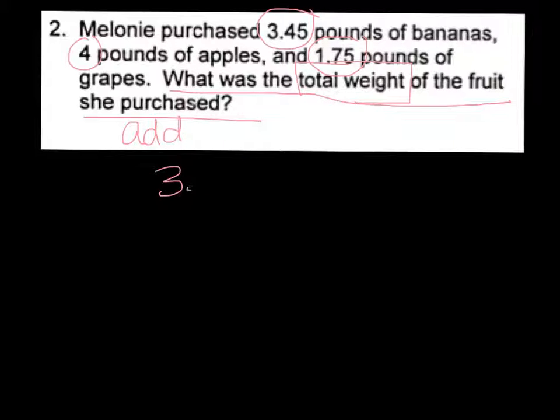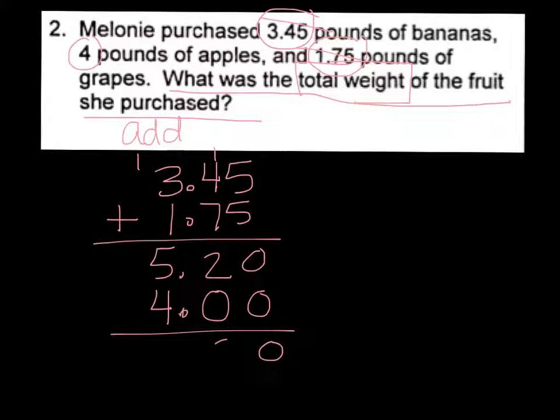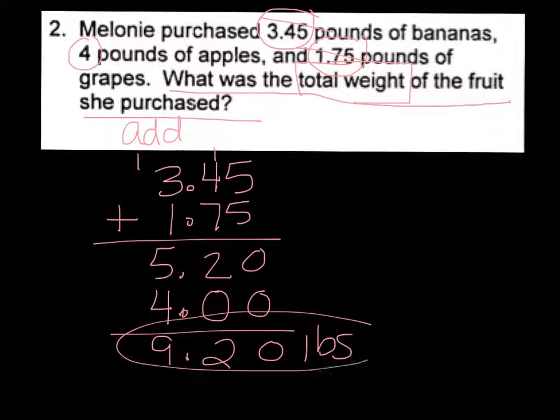Lining up your decimals. So 3.45 plus 1.75. Zero carry the one. Seven, eight, nine, ten, eleven, twelve, three, four, 5.20. So you've added the 3.45 and the 1.75. Now you need to add the four. Remember, if it's a whole number, there's always an invisible decimal point to the right of it. And when we add that, we've got 9.20 pounds.